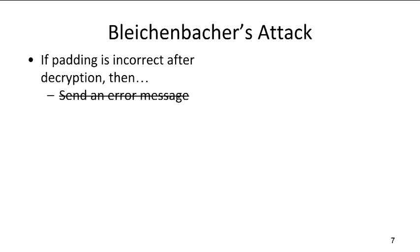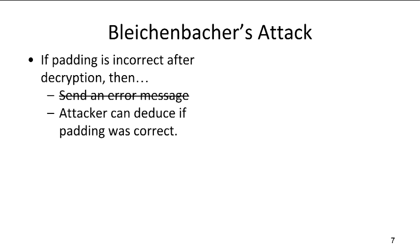The straightforward answer most people give is that the server should send back an error message — alert the client, say it decrypted the RSA ciphertext and the padding looks invalid, and abort or retry. But this is actually a vulnerability, because if an attacker has an RSA ciphertext and wants to know whether it's valid or invalid, they can connect to such a server, send that ciphertext, and see whether they get back an error message or not. Bleichenbacher's attack from 1998 identified this vulnerability and showed an algorithm where the attacker sends clever modifications of an intercepted ciphertext, learns whether each is valid or not from the server's response, and gradually combines these answers to decrypt the RSA ciphertext.